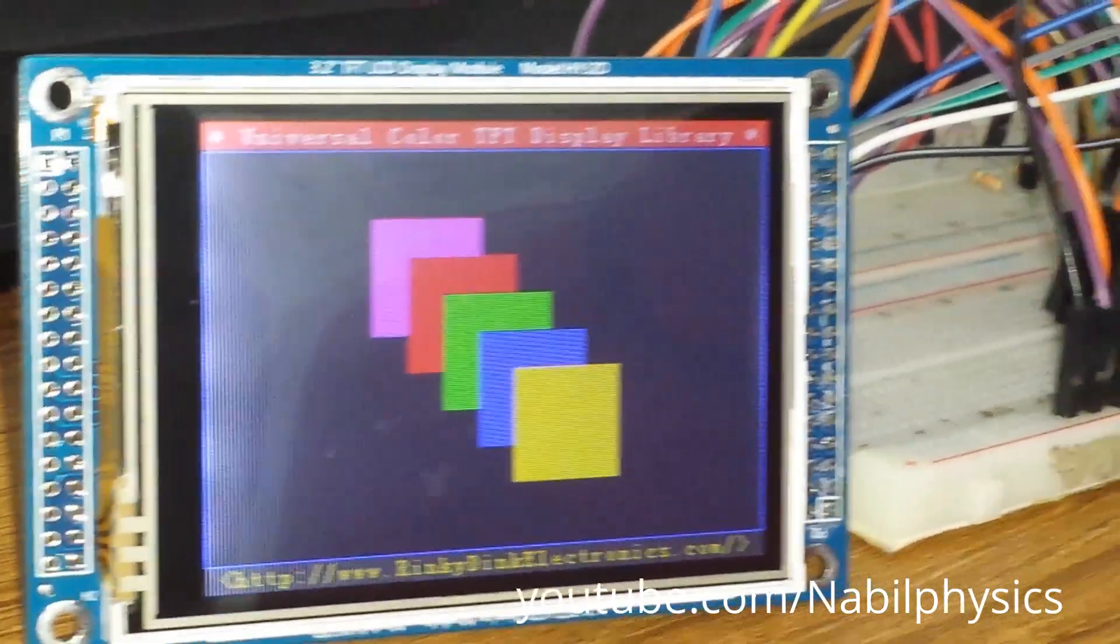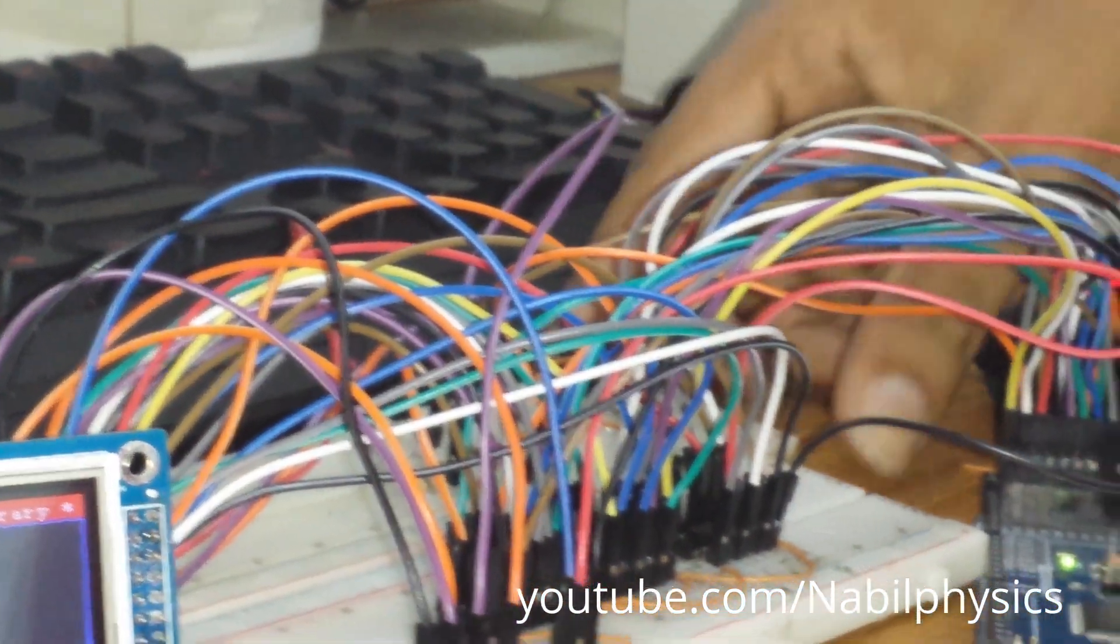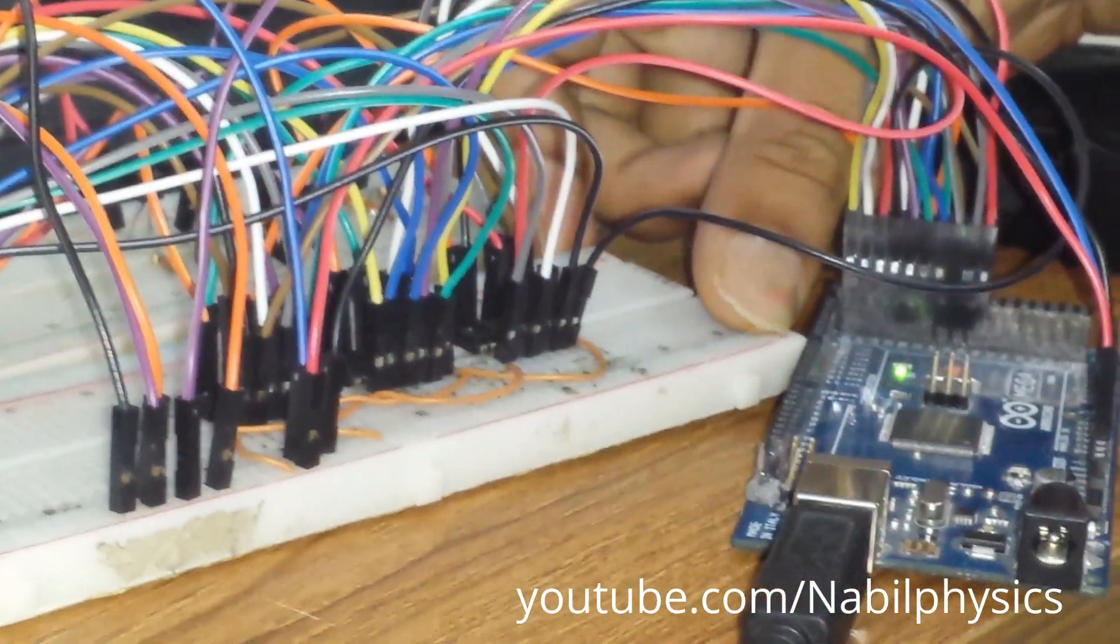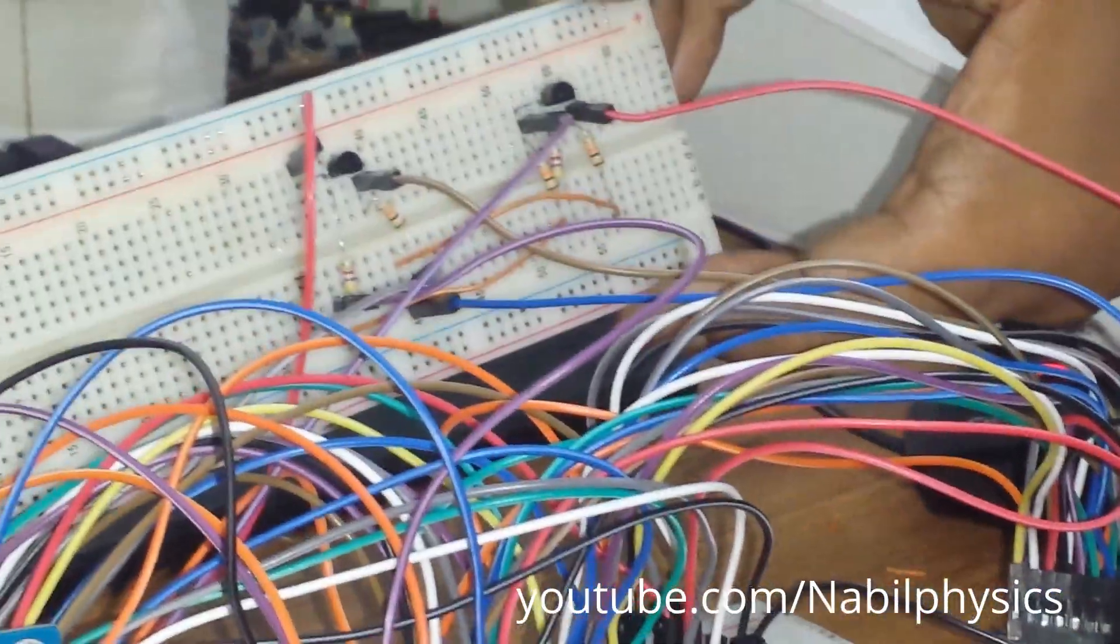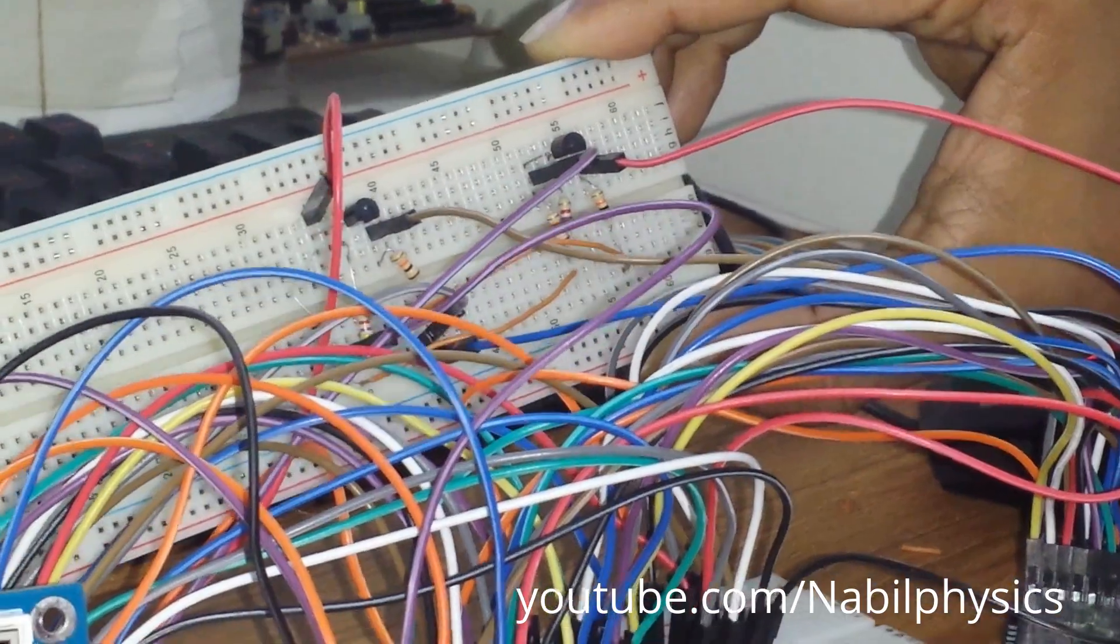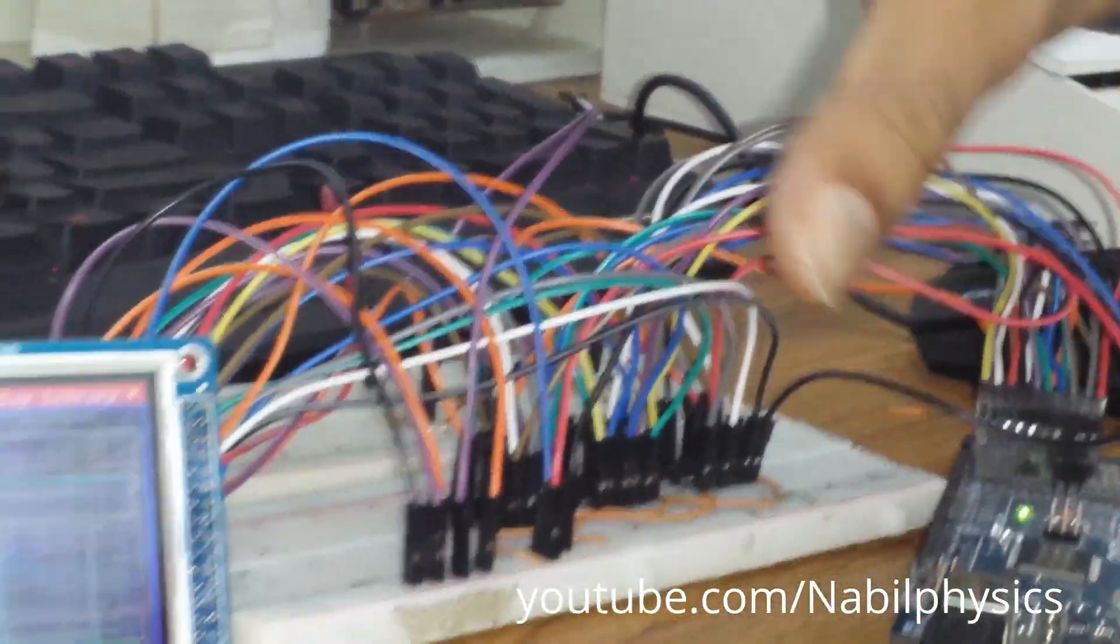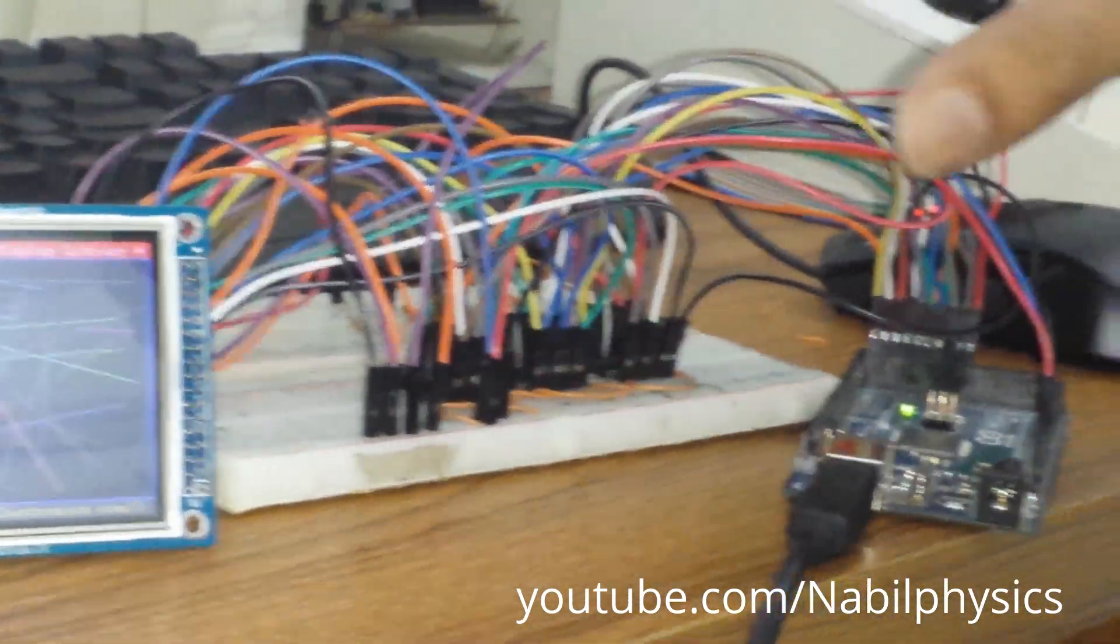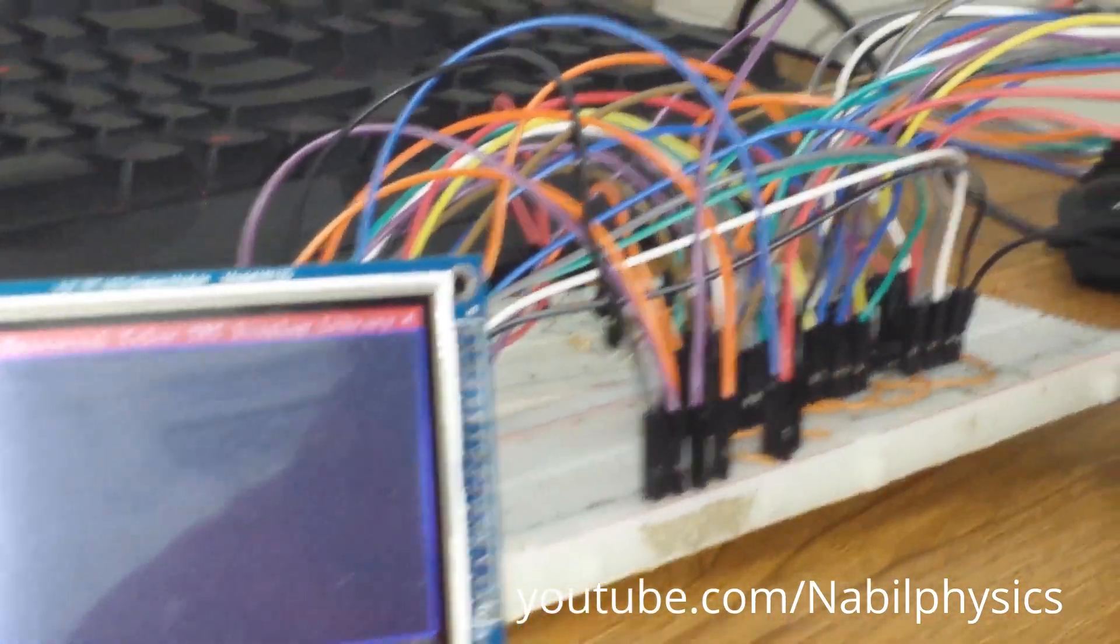And this is the circuit. And I have used both the IC and the transistor to show you that both the circuits actually works. And this is the all thing I have put together to run the TFT display using the Arduino.